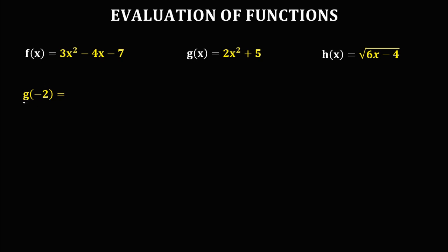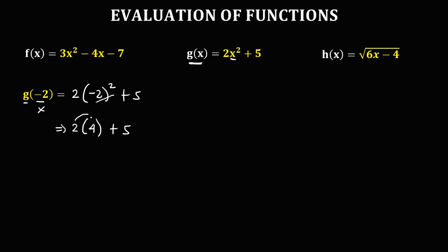For the next given, g of negative 2: since x is equal to negative 2, we substitute to get 2 times negative 2 squared, then plus 5. Simplifying: negative 2 squared is negative 2 times negative 2, which is positive 4. So 2 times 4 is 8, then plus 5. Therefore, g of negative 2 is equal to 8 plus 5, that's positive 13.